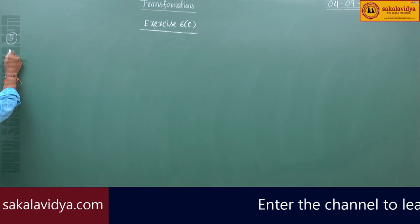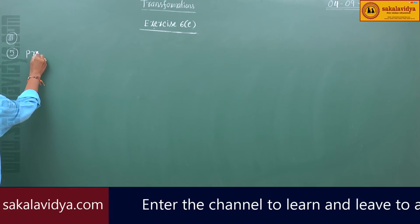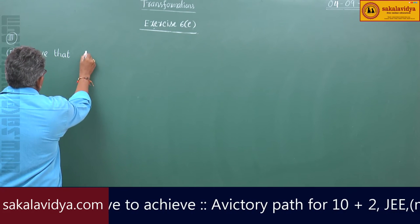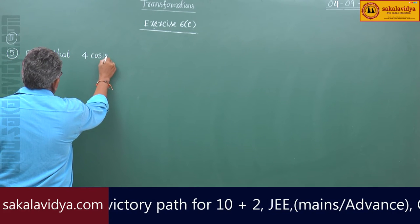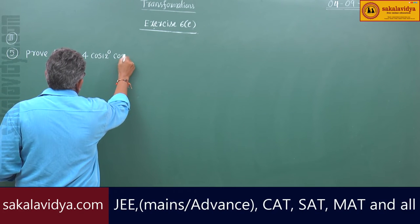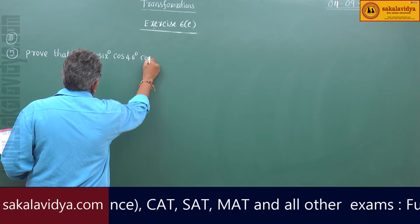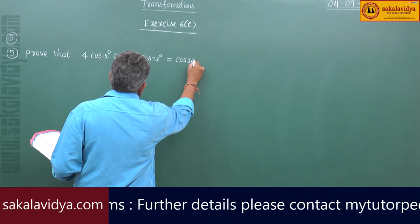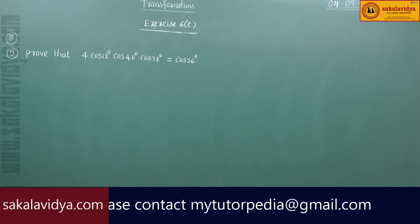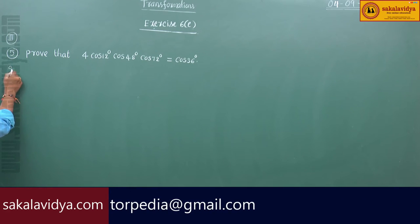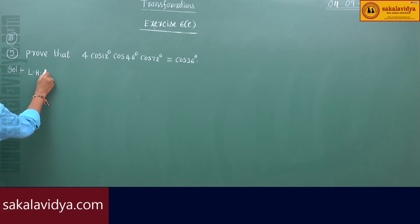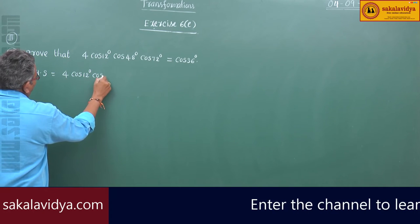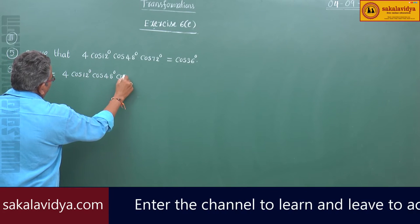5th problem. Prove that 4·cos12 degrees, cos48 degrees, cos72 degrees is equal to cos36 degrees. Okay, let us prove. Left hand side: 4·cos12 degrees, cos48 degrees, cos72 degrees.